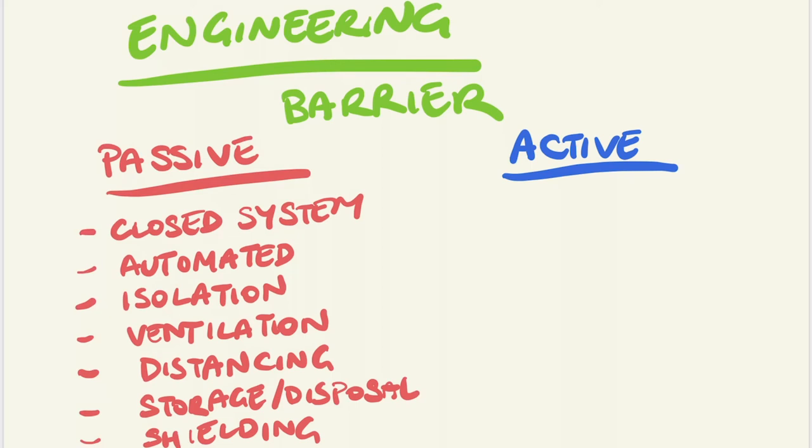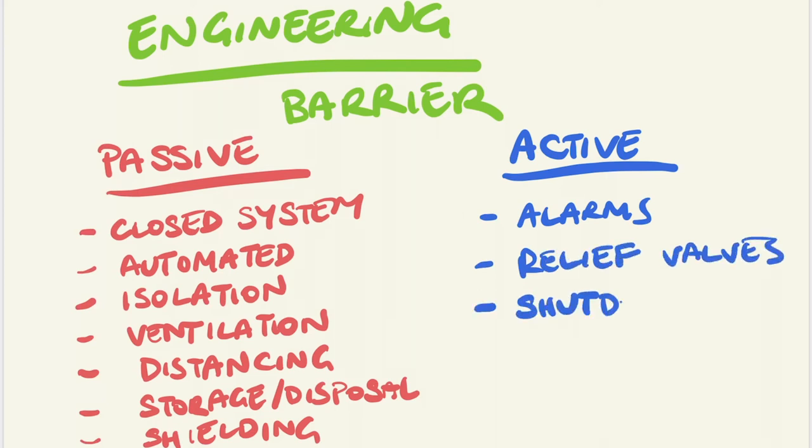Active barriers work by detecting a hazardous condition and either alerting the operator or initiating an automated process. These can include alarms or TRIP systems, pressure relief valves, or automated shutdown systems.